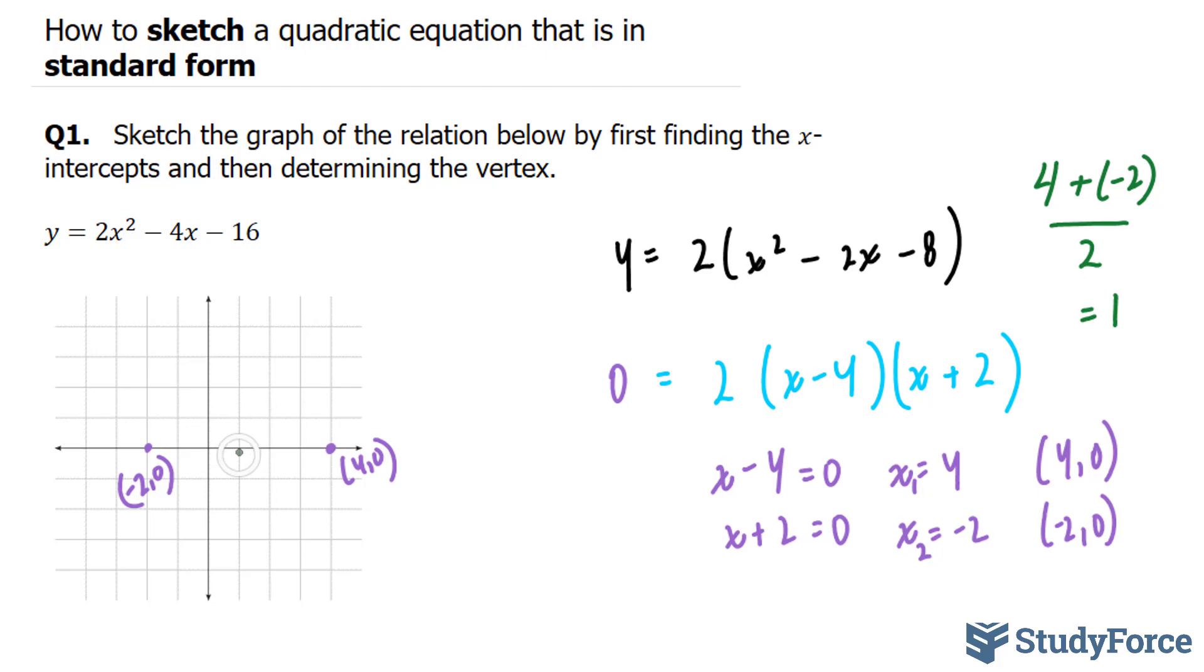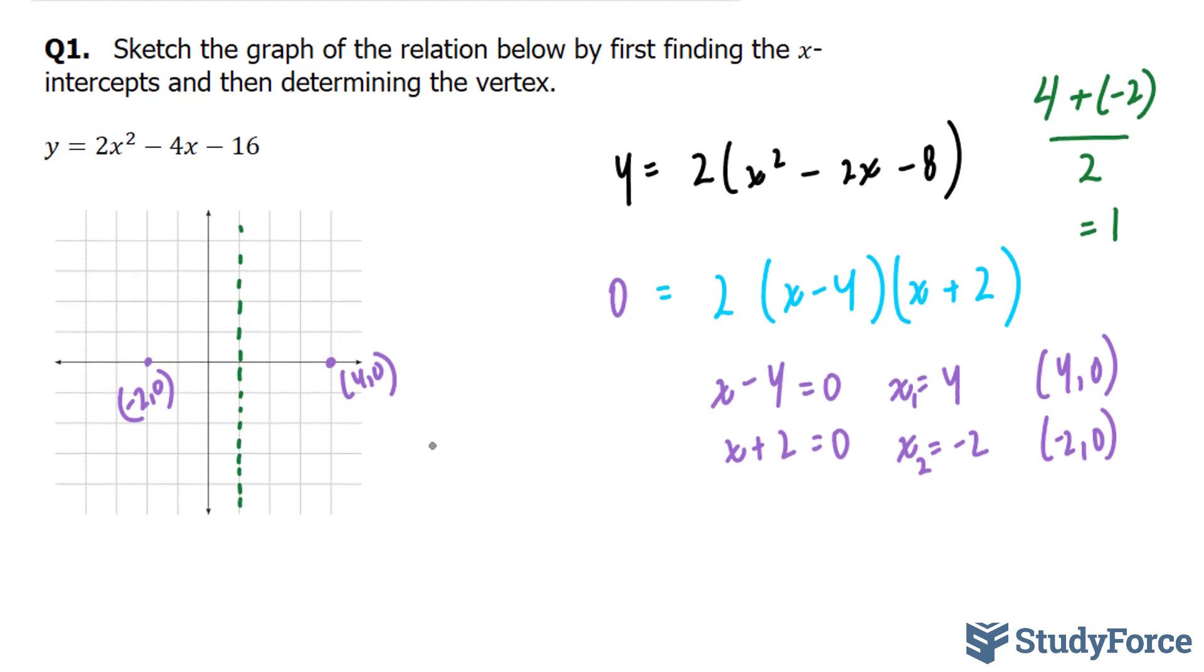So I know the x-coordinate of my vertex will be 1, and that's right there, so it'll be somewhere along here. To find the y-coordinate, I have to take this number and substitute it into my equation. So I have y = 2(1)² - 4